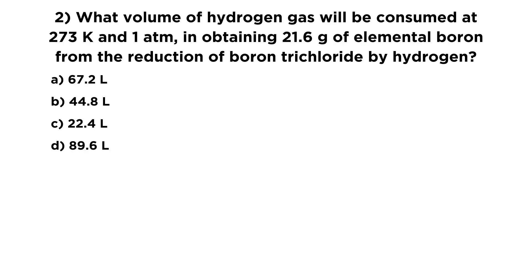Now moving on to the second question here. We know that we are going to be obtaining elemental boron from the reduction of boron trichloride by hydrogen. We need to take that sentence and make a chemical equation out of it. So boron trichloride, that's BCl3, and then we have H2. We are reducing boron trichloride with hydrogen.